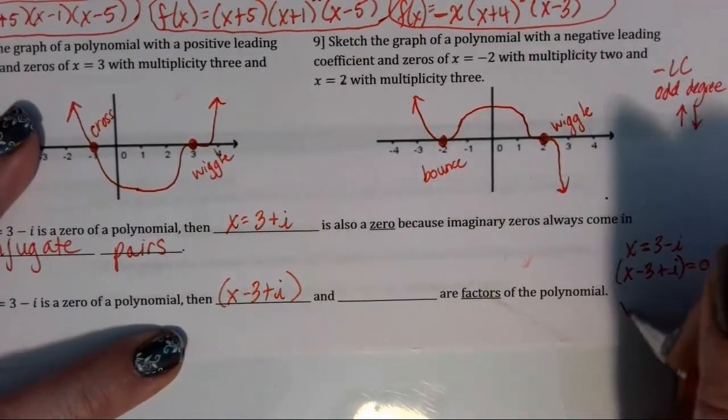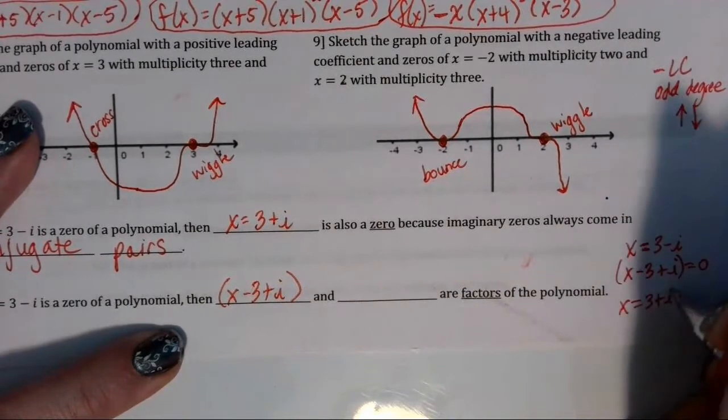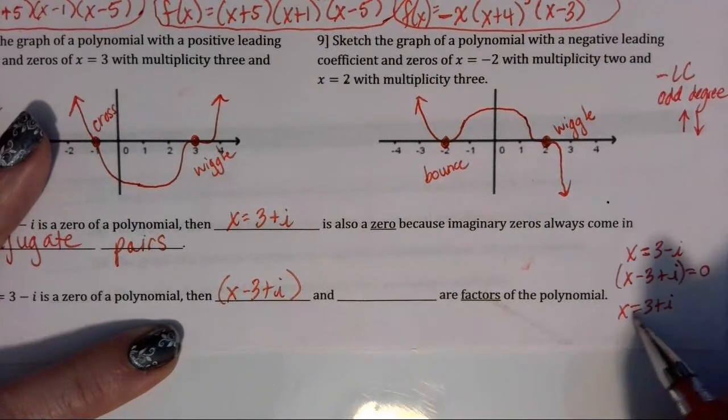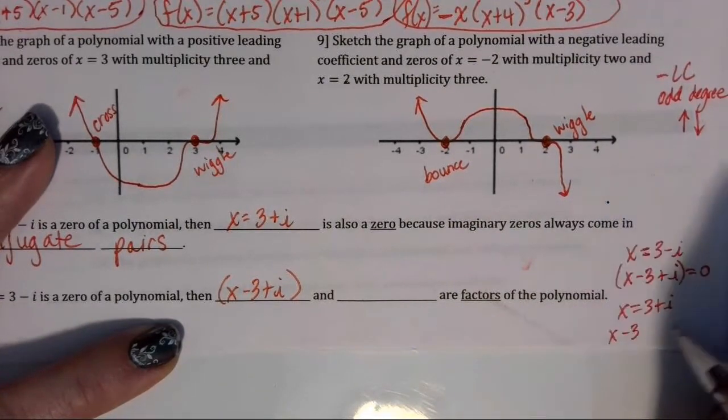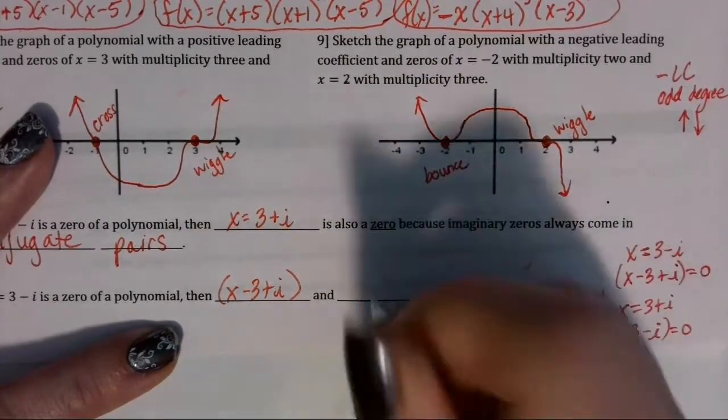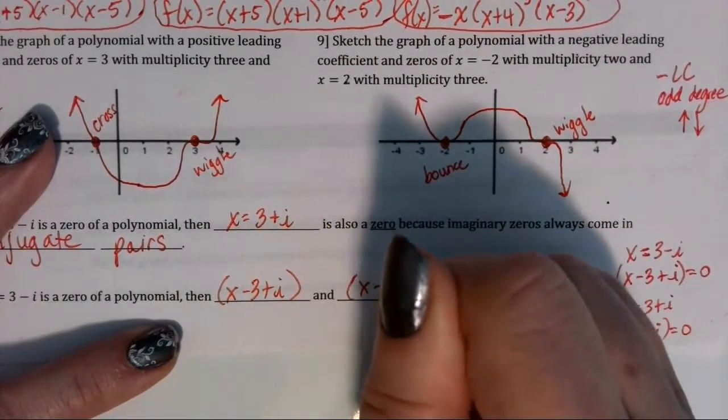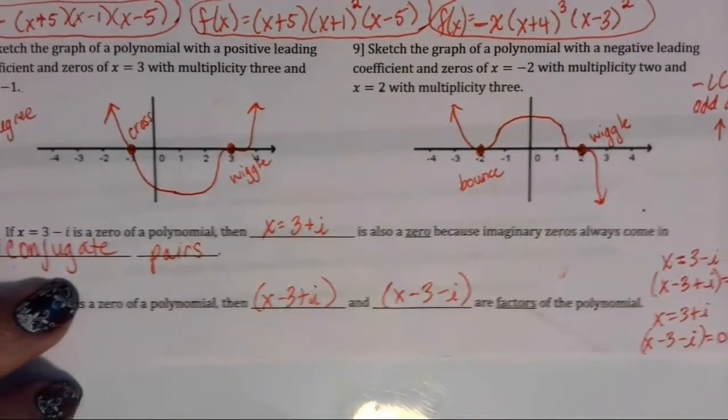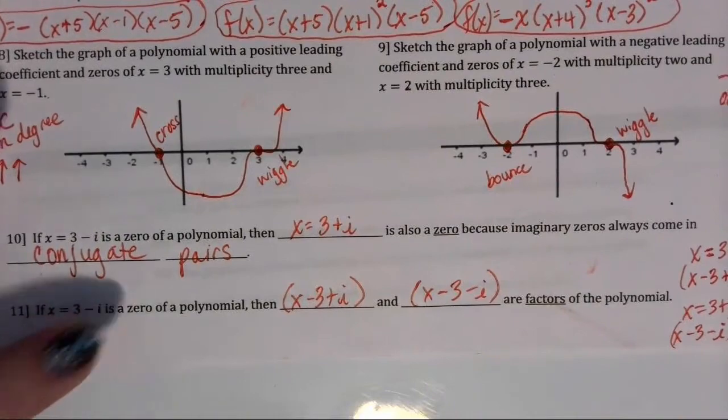So if x equals 3 plus i, then when I solve this to zero, I subtract 3 and then subtract i, and then that would be my second factor. So x minus 3 minus i would be the factor for the conjugate in number 11.